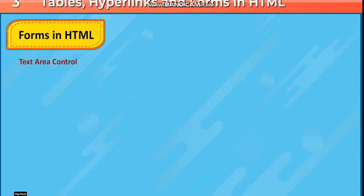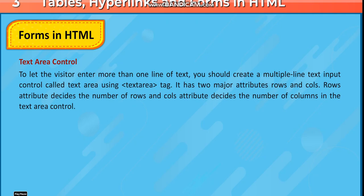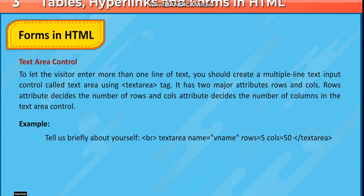Text area control: To let the visitor enter more than one line of text, you should create a multiple-line text input control called text area using the textarea tag. It has two major attributes: rows and columns. The rows attribute decides the number of rows and the cols attribute decides the number of columns. For example: "Tell us briefly about yourself", BR, textarea name="vname" rows=5 cols=50 /textarea.